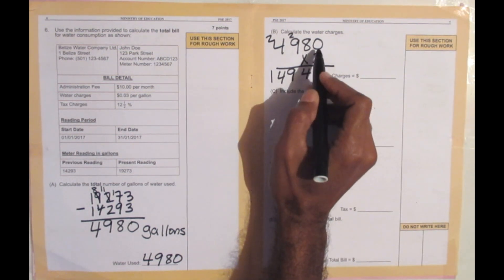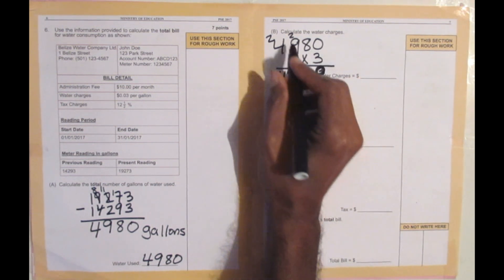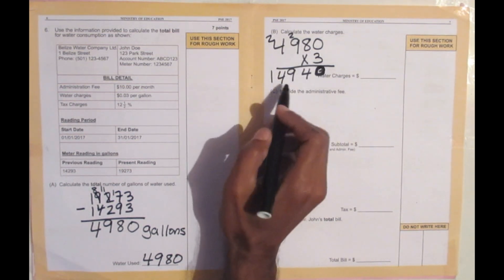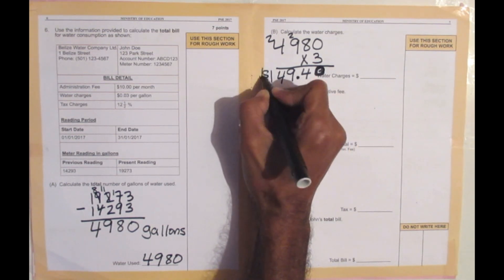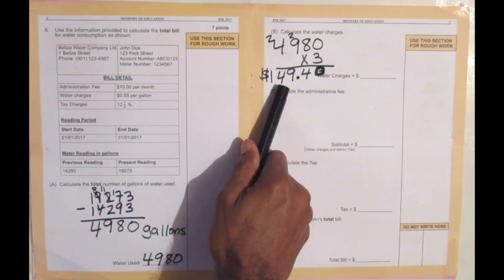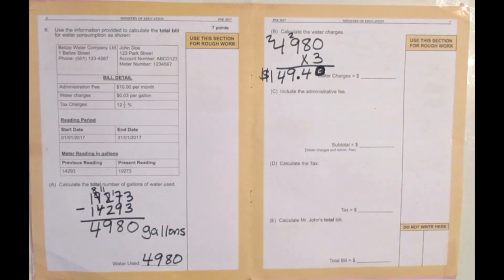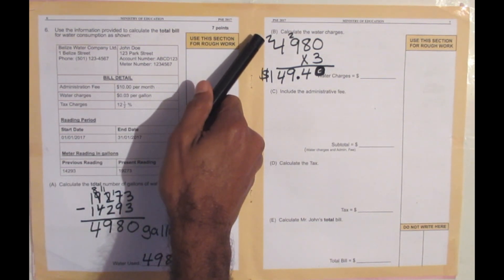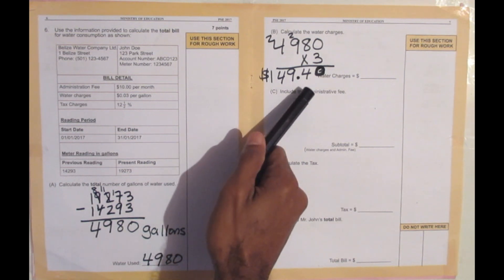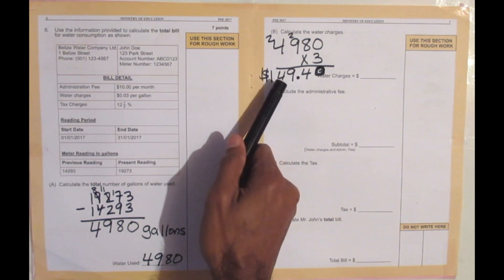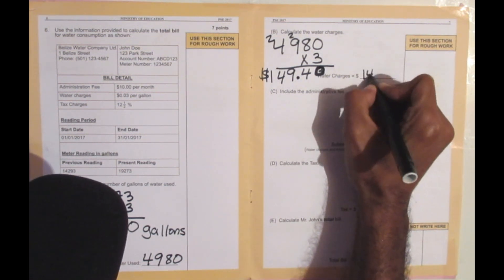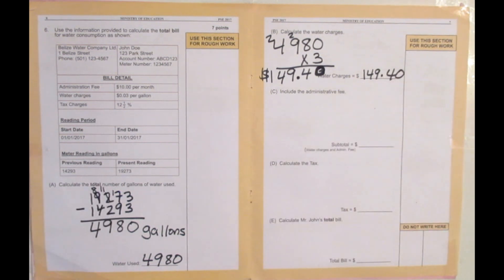Multiplying: 3 times 0 is 0; 8 times 3 is 24, bring down the 4, carry the 2; 9 times 3 is 27 plus 2 is 29, bring down the 9, carry the 2; 4 times 3 is 12 plus 2 is 14. That gives 14,940, and at two decimal places that's $149.40. So the water charges are $149.40, and part B is solved.